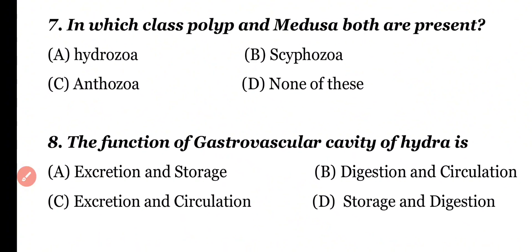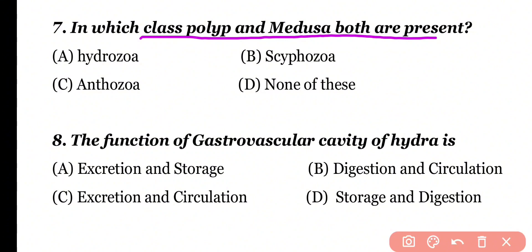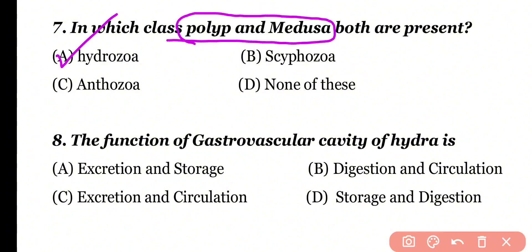Question number 7: In which class are both polyp and medusa present? Hydrozoa, Scyphozoa, Anthozoa, or none of these. Correct answer is option A. The Hydrozoa class of Coelenterata has both polyp and medusa. In Scyphozoa and Anthozoa, the dominant stage is polyp.